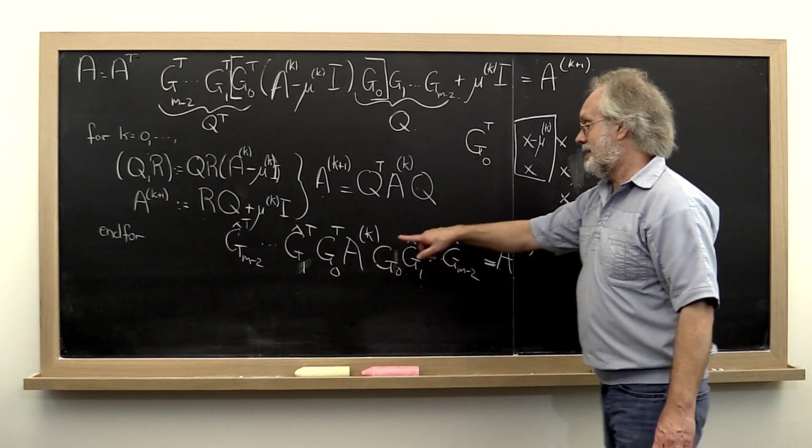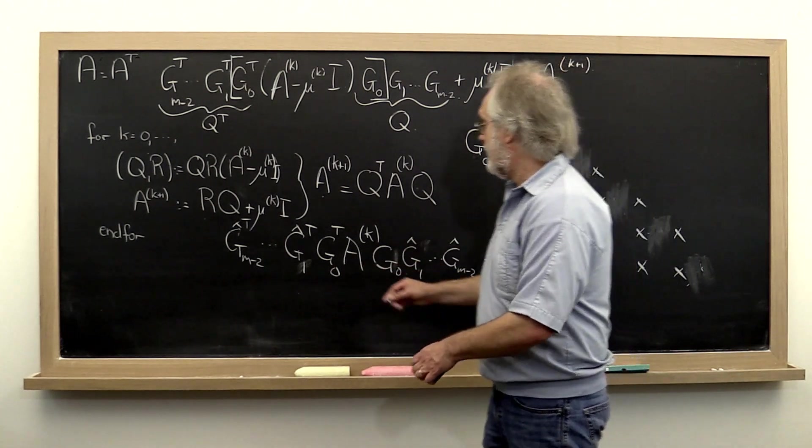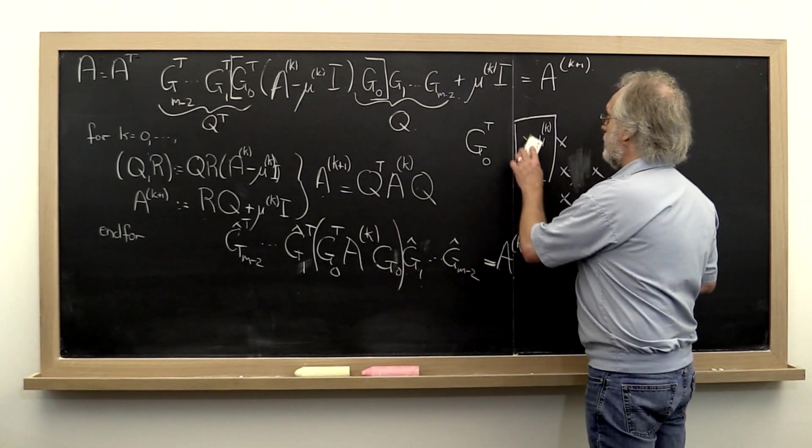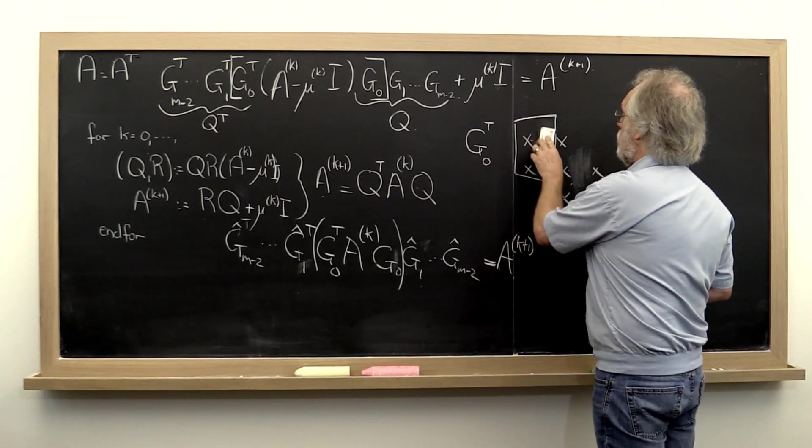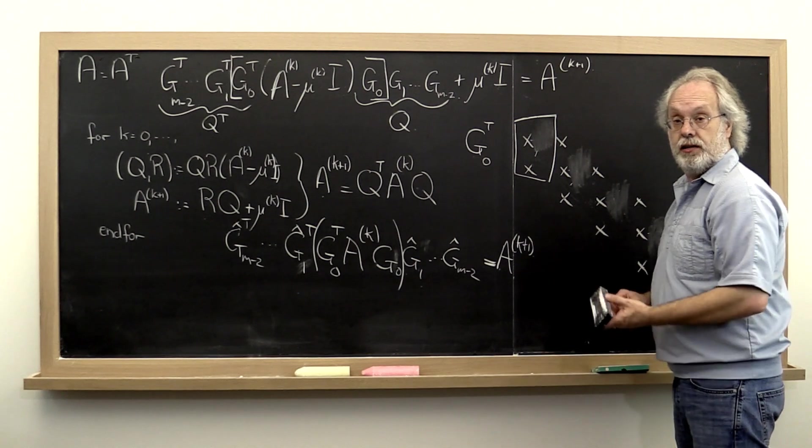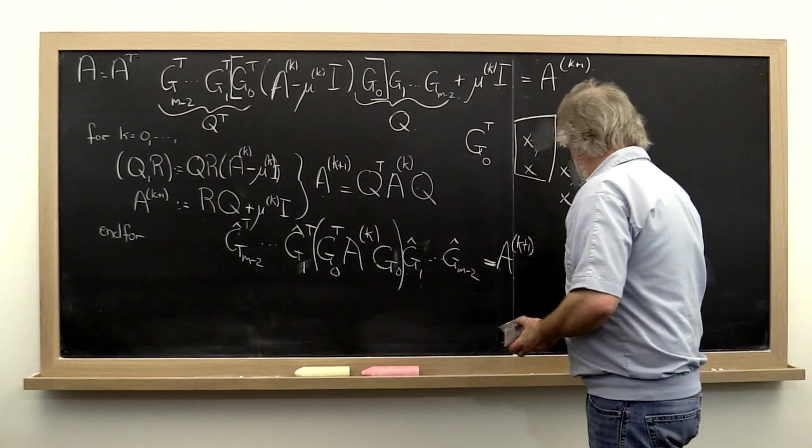We can take that Givens rotation then back to our original matrix and apply it from the left and from the right. So now we apply this Givens rotation from the left and from the right. That introduces a nonzero right there and right there.